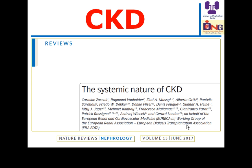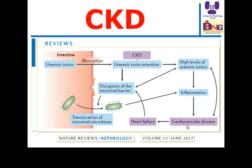Another interesting review published in Nature Reviews of Nephrology discusses the systemic nature of chronic kidney disease. Systemic manifestations include problems in the gut barrier and abnormal microbiome, leading to elaboration of uremic toxins from the intestine. The uremic environment and retention of uremic toxins lead to cardiovascular problems, inflammation, and many other issues. I recommend all of you to read this article in detail.